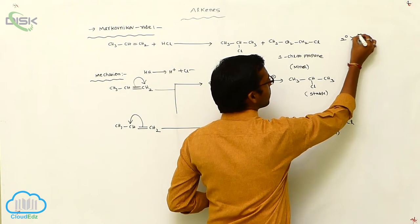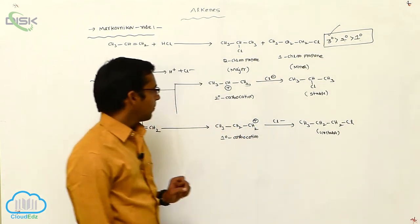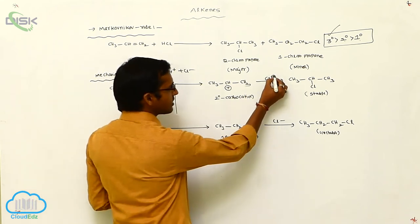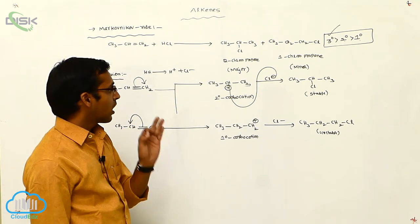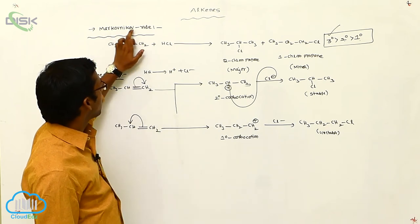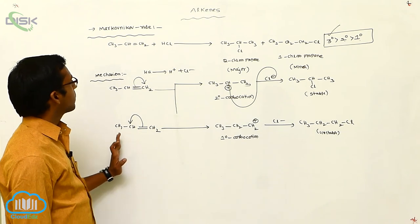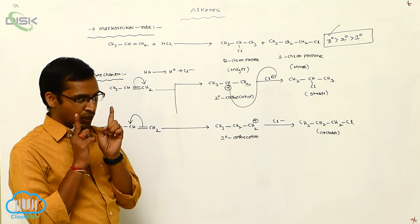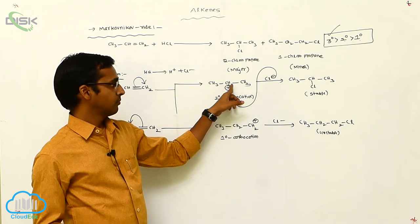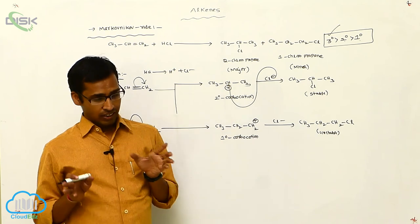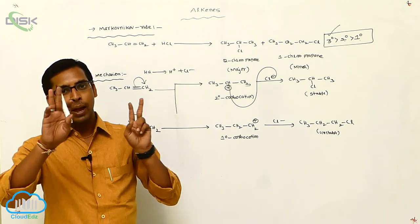Secondary carbocation is more stable than primary carbocation — and tertiary is more stable than secondary, which is more stable than primary. So in Markovnikov rule, the negative charged species is attached to the carbon with the less number of hydrogen atoms. This is called the Markovnikov product, and this rule is only applicable for unsymmetrical alkenes, which show two types of products — a major product and a minor product.